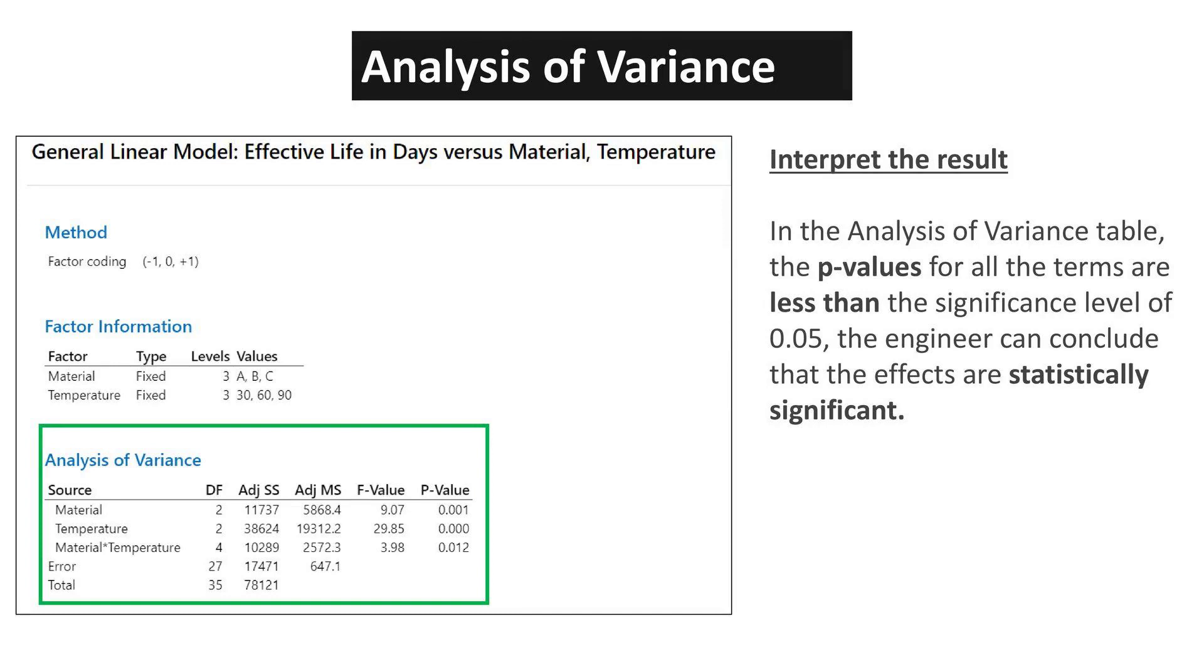The ANOVA table stands as the statistical report card, grading each factor's contribution to the model, guiding future decisions. In the Analysis of Variance table, the p-values for all the terms are less than the significance level of 0.05, so the engineer can conclude that the effects are statistically significant.